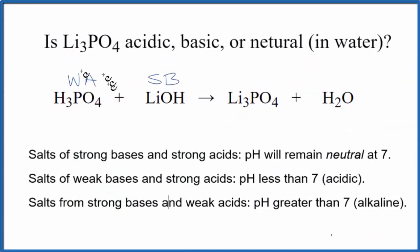Look at our rules here. We're looking for a weak acid and a strong base. Here's a weak acid and a strong base. So that means the pH is going to be greater than 7, and it's going to be alkaline.